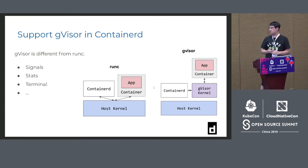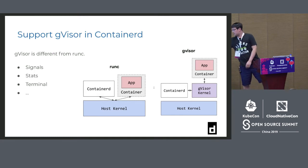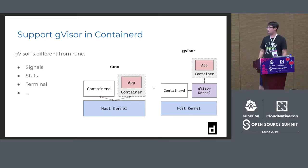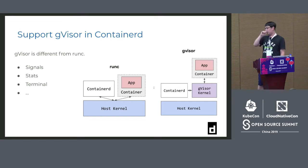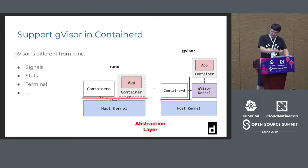This solution is based on gVisor. gVisor is open-sourced by Google — it's a sandbox technology based on a userspace kernel written in Go and it is also OCI-conformant as a runtime. Your application is in userspace and system calls go through it for virtualization, so you cannot directly access the host kernel. As a result you can have two layers of security isolation. gVisor is different from runC — on the left side is runC, on the right side is gVisor — gVisor has its own kernel.